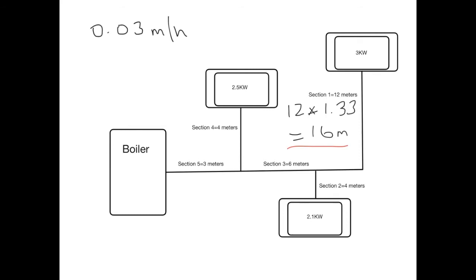Having worked out our effective pipe length and also having worked out our pressure loss per meter head, the loss through section 1 is the product of the effective pipe length and the pressure loss per meter. Therefore the loss through that section equals 0.03 multiplied by 16, which gives 0.48 meters head.